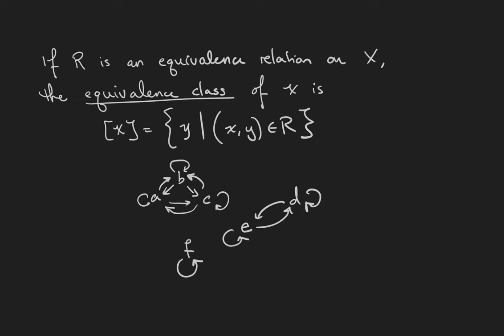In our example from earlier, the equivalence class of A refers to the set ABC. Now A is just a representative of that class, so we could also refer to it using the brackets around B or using the brackets around C.